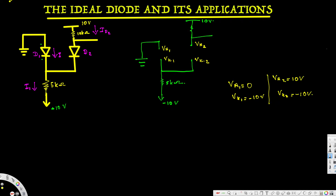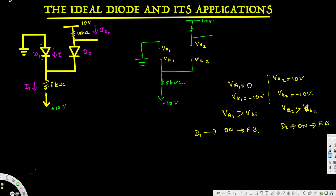Now let's compare. For D1: Va1 equals zero and Vk1 equals negative 10, so Va1 is greater than Vk1 — D1 is on and in forward bias. For D2: Va2 is greater than Vk2, so D2 is also on and in forward bias. We have to replace both diodes with short circuits, so the circuit is going to behave with short circuits in place of both diodes.